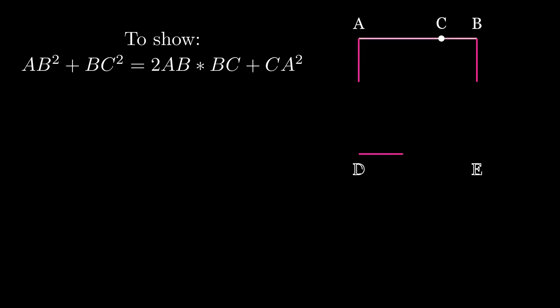We show this by drawing the square ADEB. We connect BD, and through C we draw CN parallel to BE, and through G we draw HF parallel to AB.